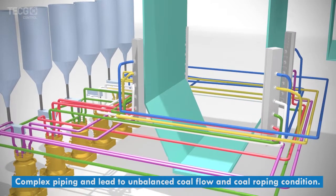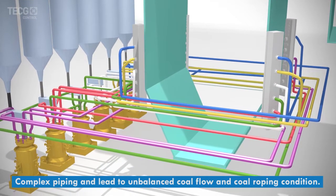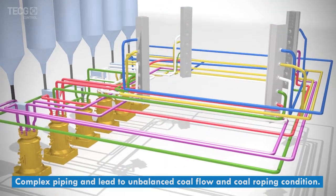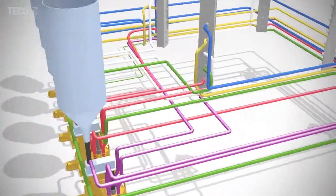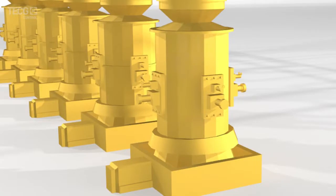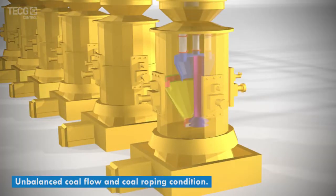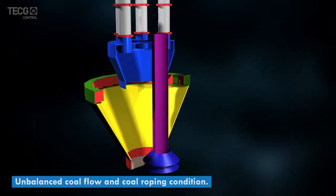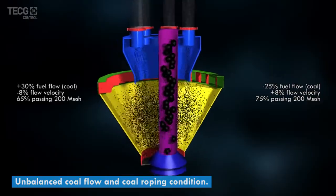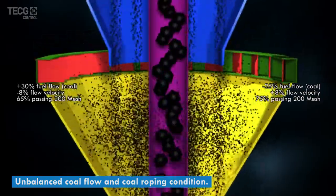In general, the coal mills are installed on one side of the boiler, while the complex coal fuel piping system surrounds the boiler. Due to the complexity of the piping network, the coal fuel supply is often being affected, causing uneven distribution and a coal roping condition.